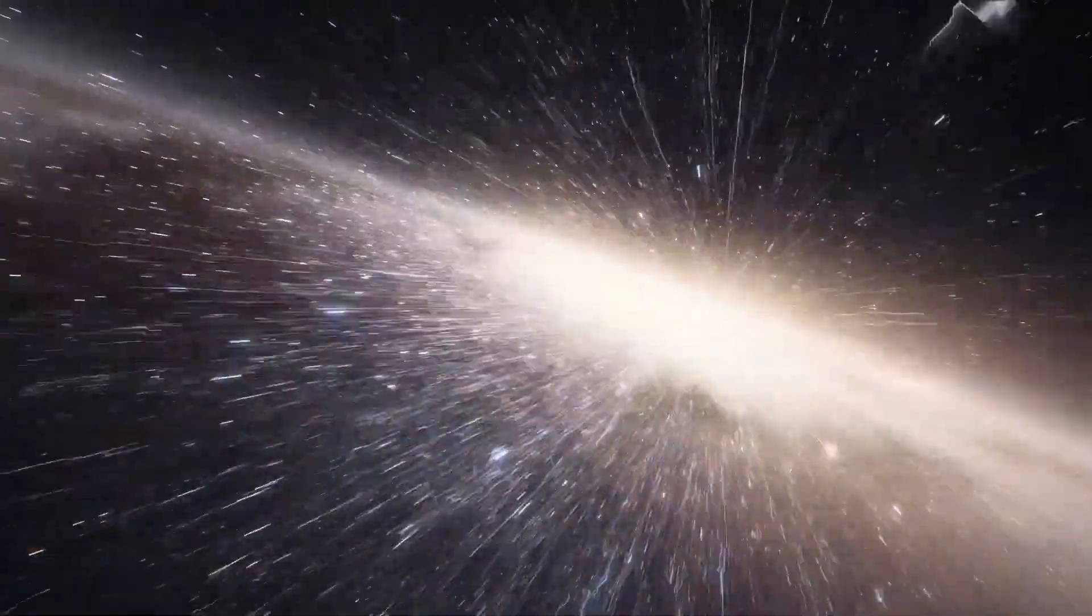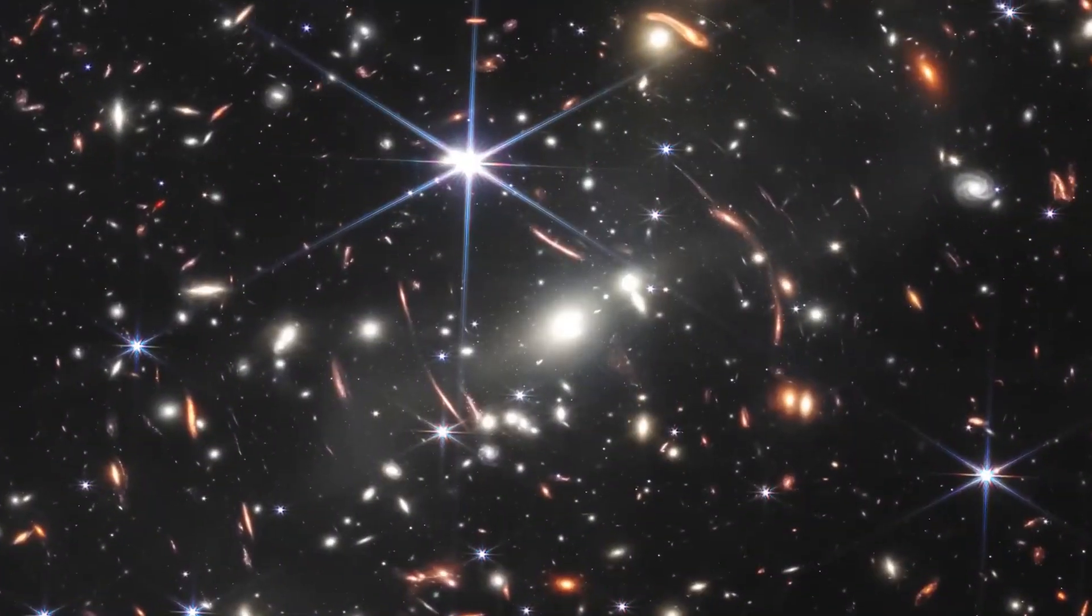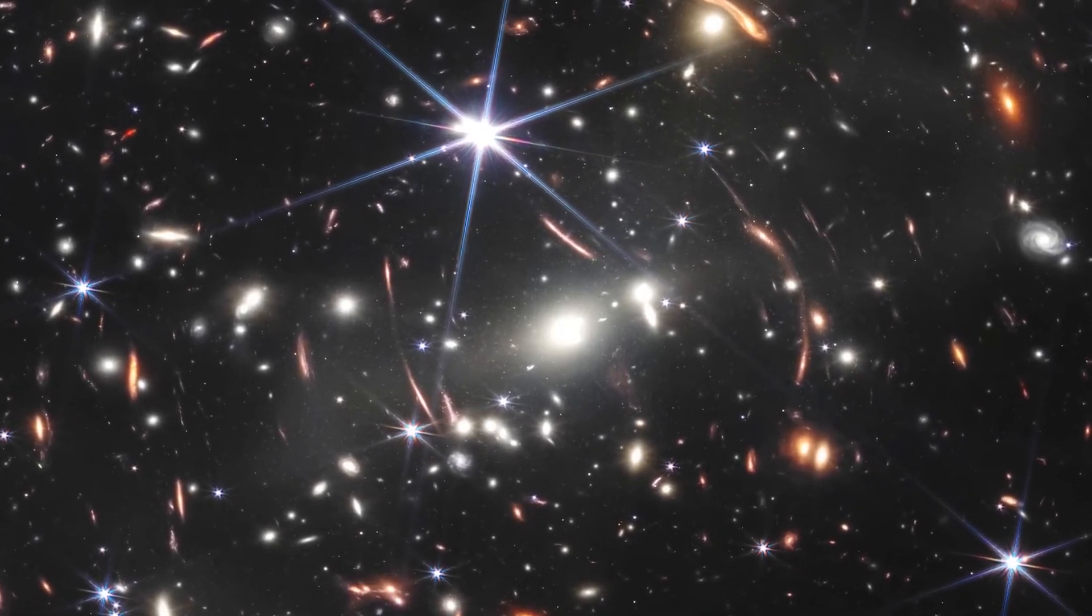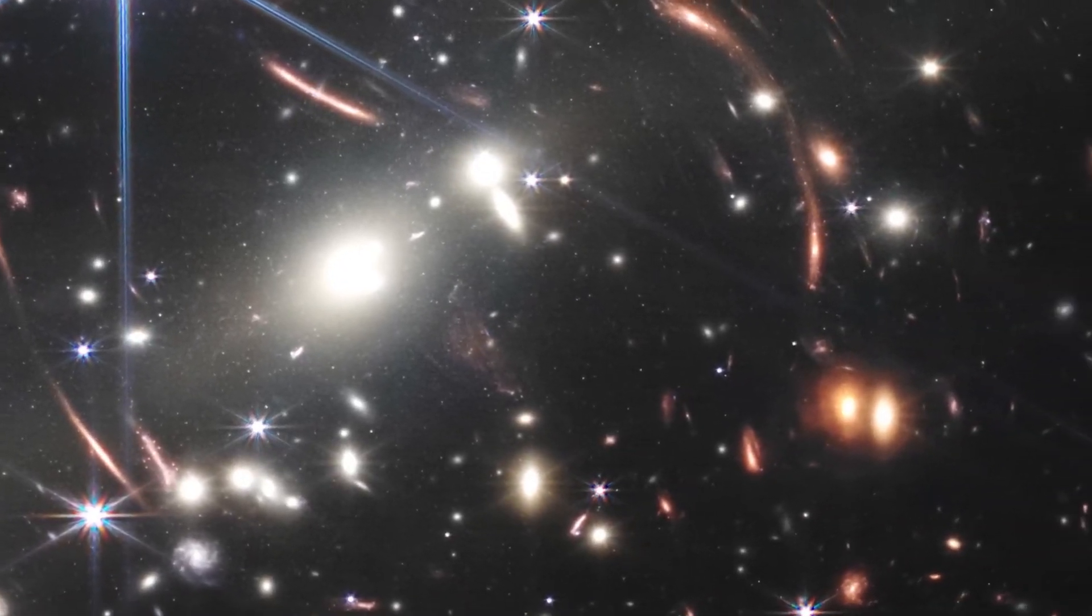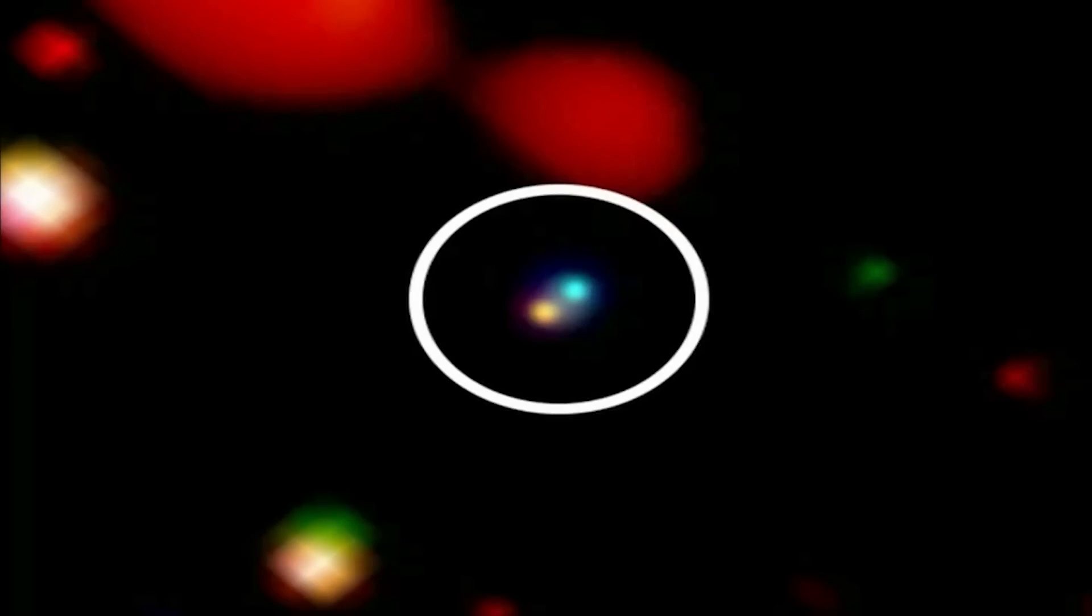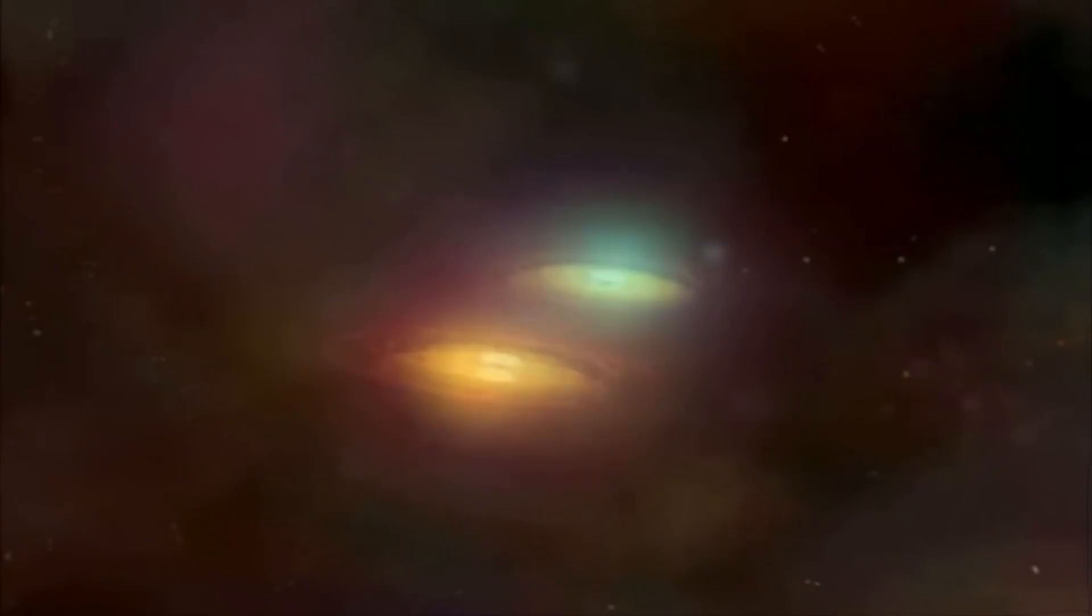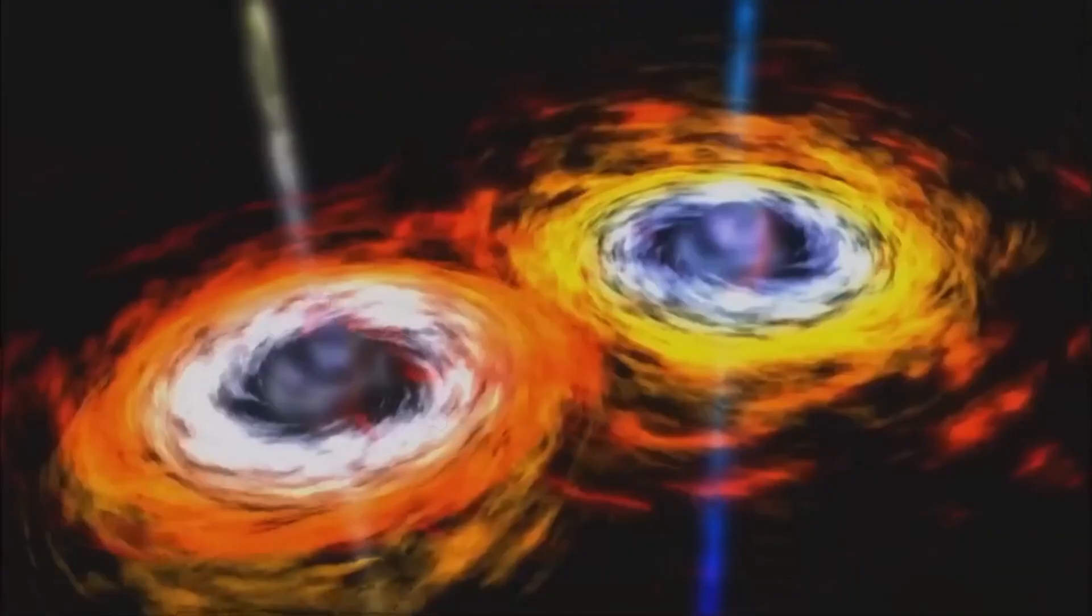Now, researchers can measure the velocities of these seven galaxies, which gives them the confidence to confirm that they are bound together in a proto-cluster. To put this in perspective, NASA scientists compared these distant galaxies to small drops of water in different rivers, that will eventually join together to form a large and powerful river.